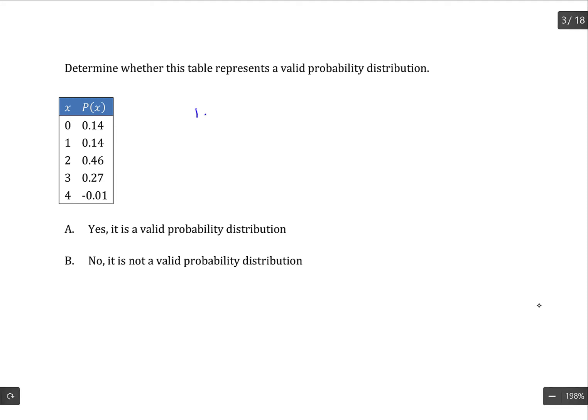One, every probability within the table needs to be within the range 0 to 1, because every single probability needs to be a valid probability. In this particular case, the last probability is a negative number, which is not in that range.